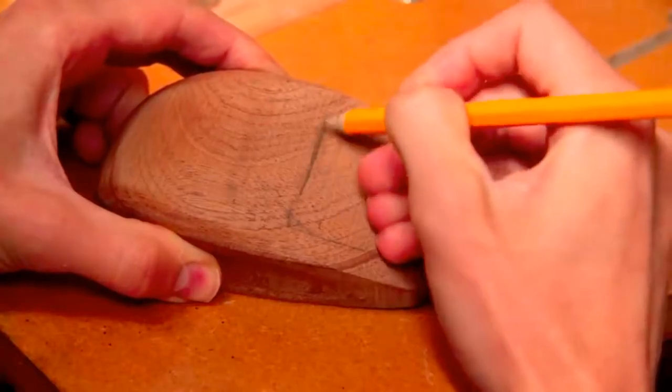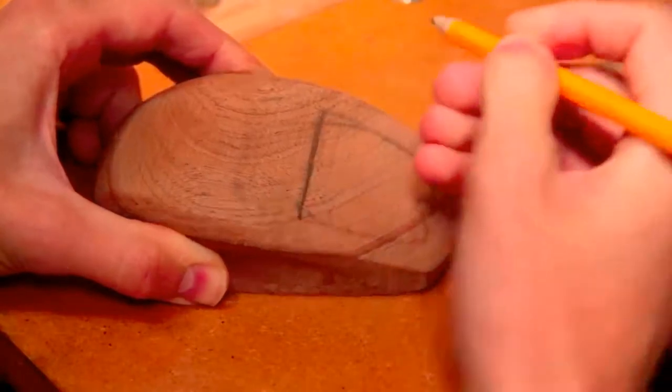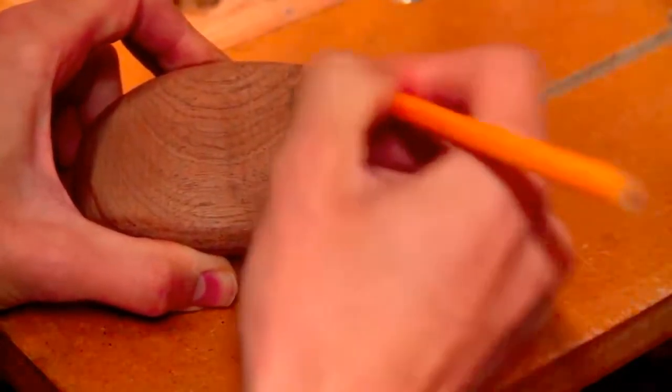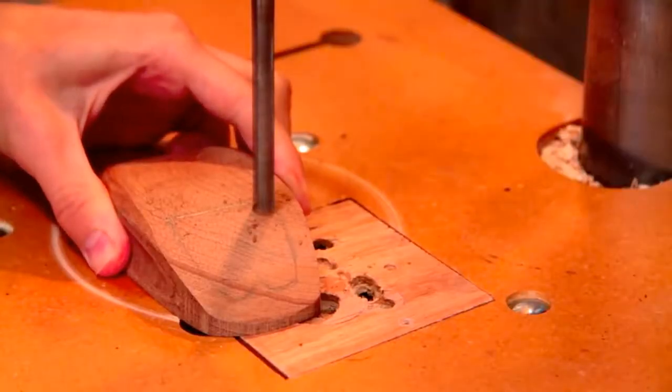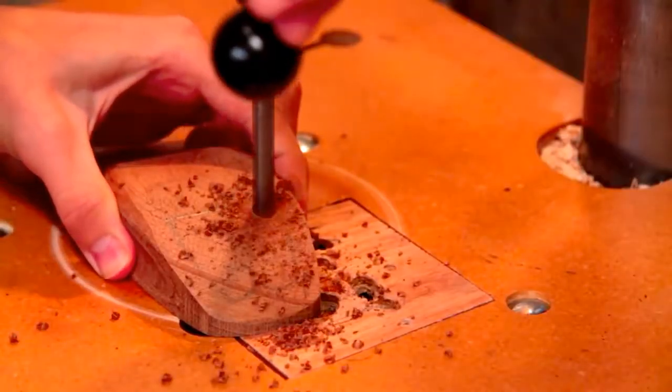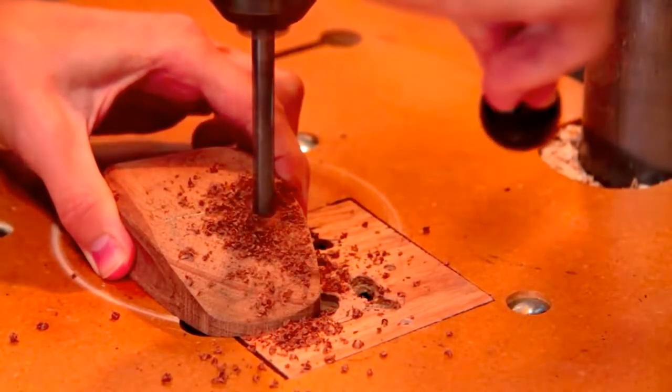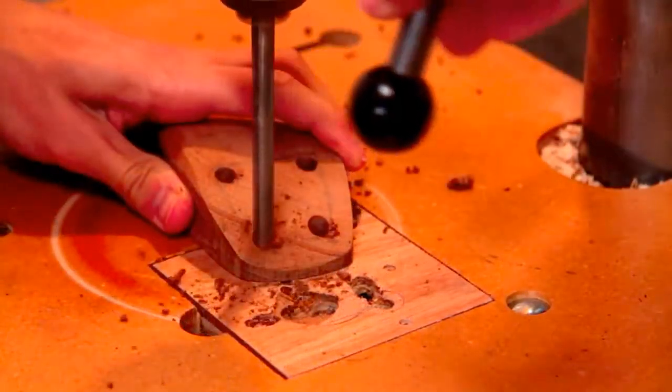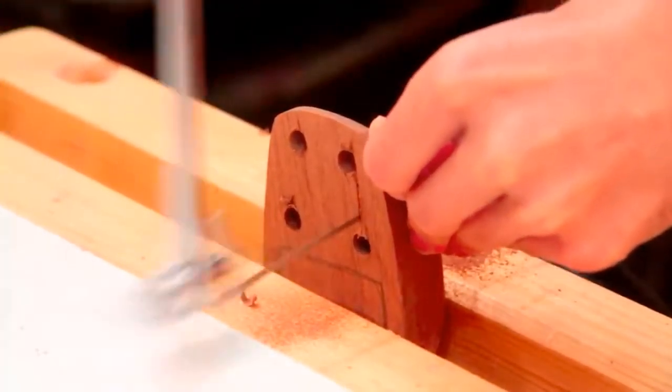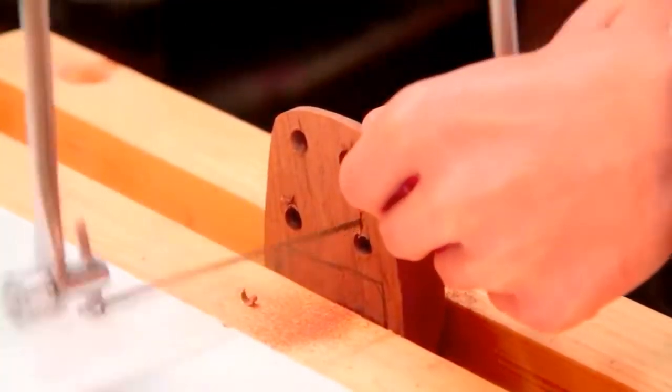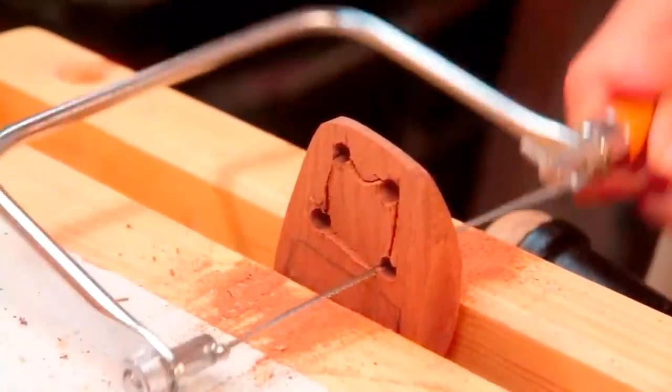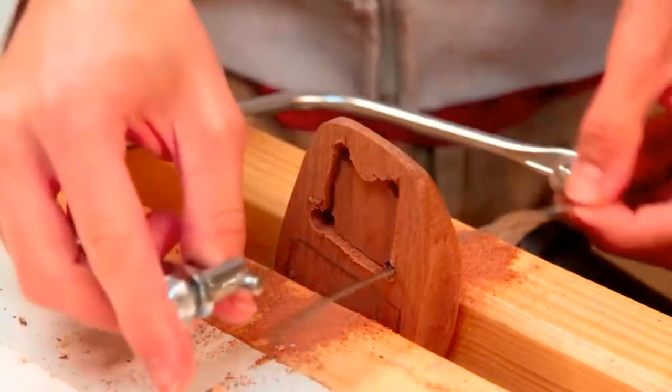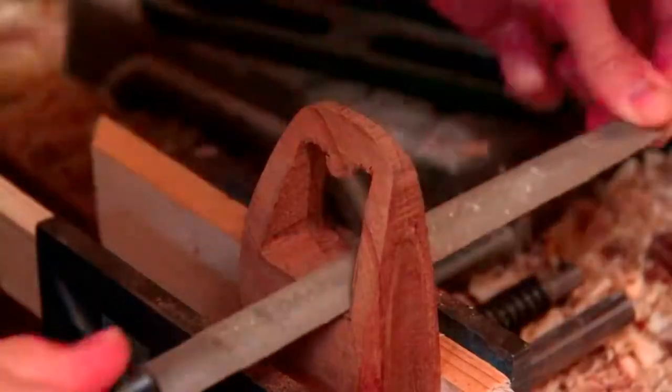Now I can turn my attention to the cavity which is needed for the electronics, so I'm just marking out where that's going to go. And to cut that out I'll start by drilling out the corners and then I can use a coping saw. The cuts were a little bit messy but I can clean that up with some hand tool work.